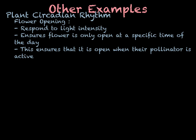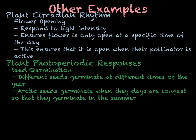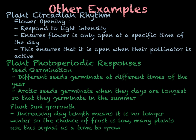Another example of a plant's circadian rhythm is flower opening. Plants respond to light intensity by opening and closing their flowers at different times of the day — they only need to be open when the creatures that pollinate them are active. For some plants this is during the day, and for others it is at night if they are pollinated by insects such as moths. Additionally, seeds from different parts of the world germinate at different times; for example, seeds of arctic plants only germinate when days are very long, ensuring they germinate in summer when temperatures are warmest. Some plants also start to grow when day length increases to avoid frost.